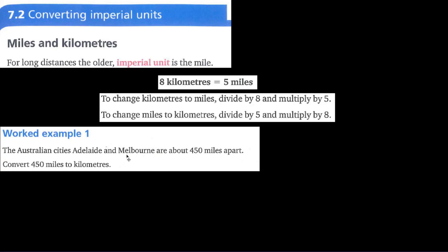In the first exercise, the Australian cities Adelaide and Melbourne are about 450 miles apart. We need to convert 450 miles to kilometers. Since we are converting miles to kilometers, we will first divide by 5 then multiply by 8.